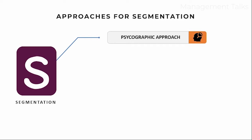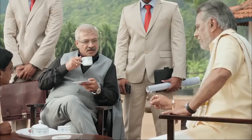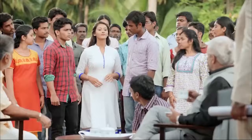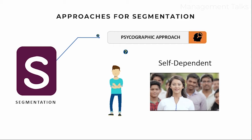The third base is psychographic segmentation, in which the market is segmented on the basis of personality, motives, and traits. Here we can take the example of Rin. Rin is targeting those people who are self-dependent and have a confident personality.